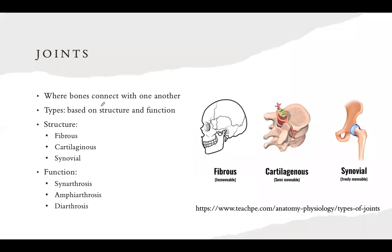Joints are where bones connect with one another and articulate with each other. They can be classified based on their structure and function. For structure, there's fibrous, which is made out of fibrous connective tissue. For cartilaginous, they're made out of hyaline cartilage or fibrocartilage. And then for synovial, their distinction is that they have a joint cavity.